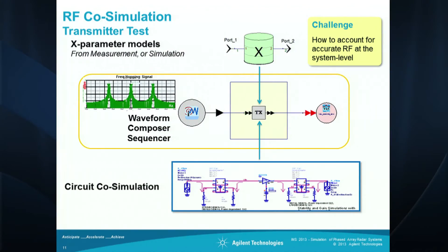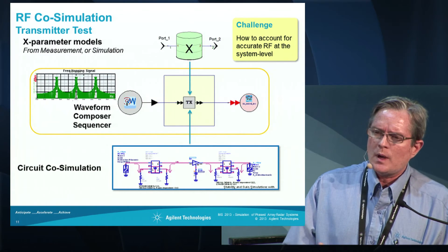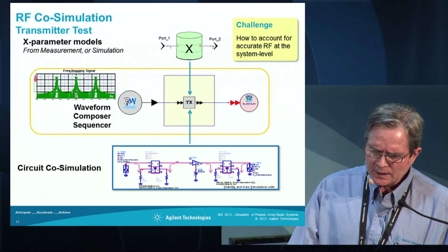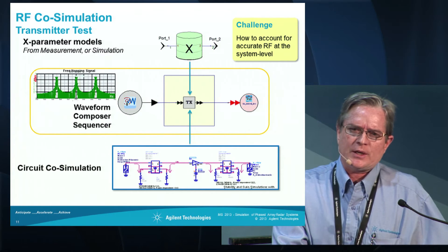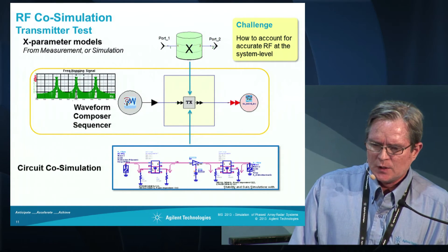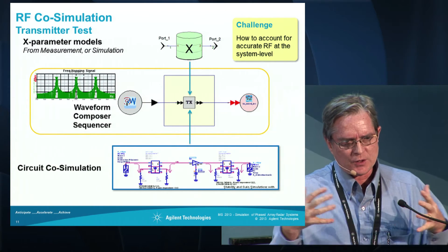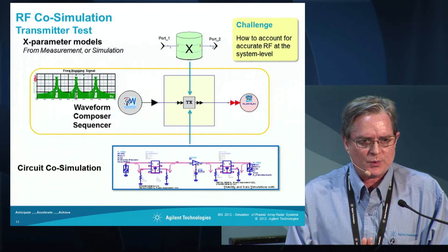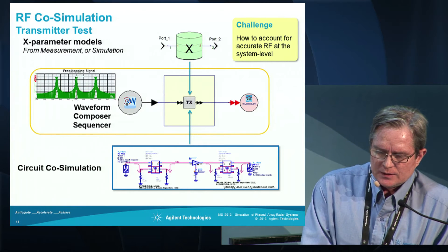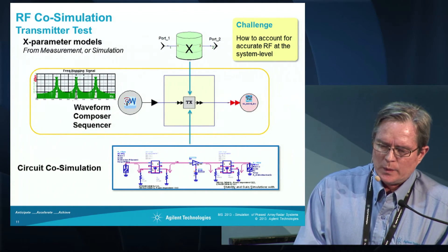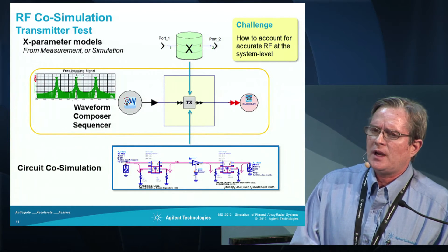One of the other things that's really important is RF co-simulation. In this particular example, the spectrum on the left shows frequency hopping — we see a signal at 1.3 gigahertz, 1.5, and 1.7. We want to generate that sequence and be able to co-simulate with our RF. We have a waveform composer sequencer, which is also used with instruments, where we can take simulated waveforms, construct those waveforms, and then sequence them out through actual hardware. We support X parameters, so if you have an X-parameter file you can co-simulate with that.